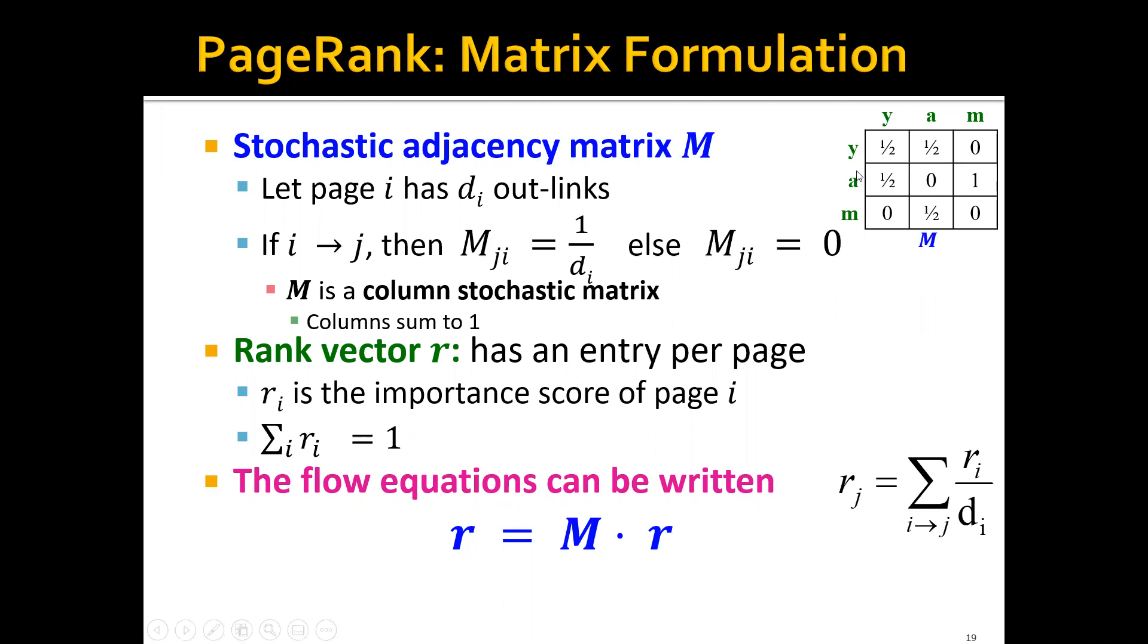For example, here is an example stochastic adjacency matrix. If node y actually links to y and a, then these two entries would both be 1/2, and this one would be zero. We can see that each column in this matrix adds up to one.